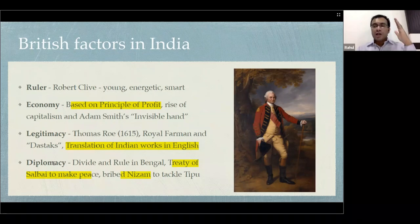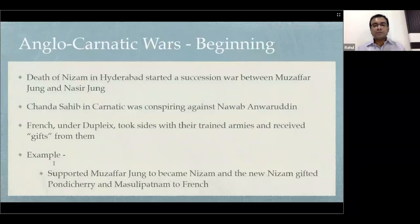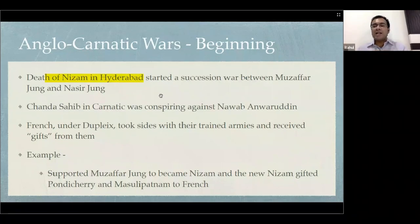This is how the British were in the perfect position to dominate India — they scored on good rulers, good economic principles, legitimacy borrowed from the Mughal Empire, understanding of Indian society, and diplomacy. Because of that, the British were in the perfect position to win India. Then the Anglo-Carnatic Wars started — basically a struggle between the British and French for the Indian empire. The Anglo-Carnatic Wars started because of the death of the Nizam in Hyderabad, which led to a succession war between Muzaffar Jung and Nasir Jung.